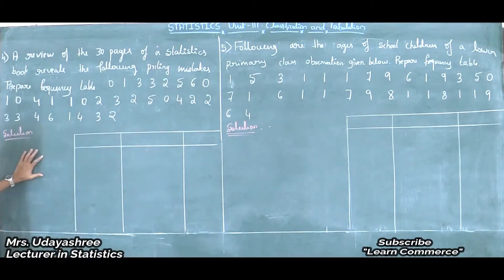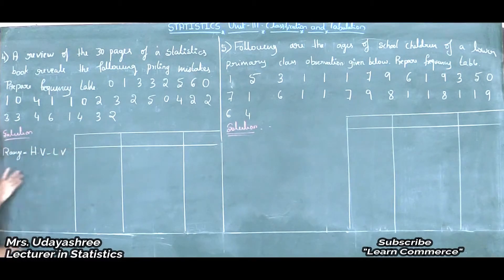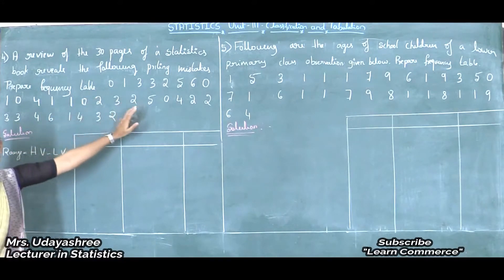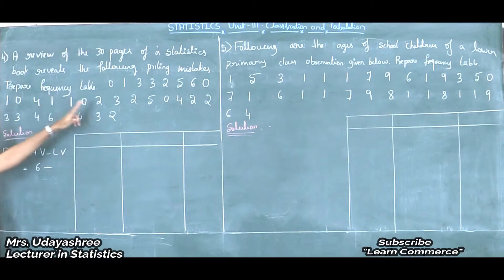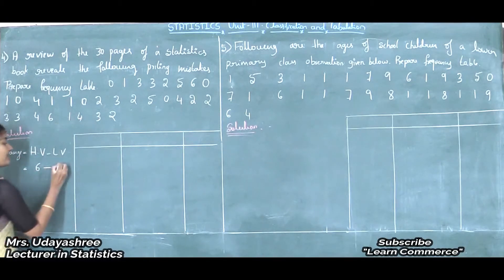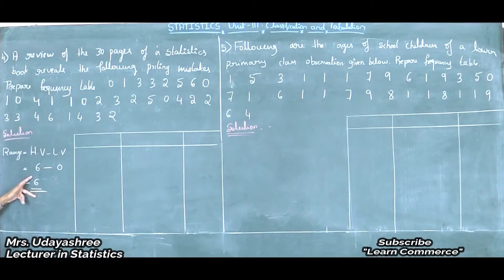First step: we need to find the range. The formula to find range is highest value minus lowest value. In this problem, the highest value is 6 and the lowest value is 0. So, 6 minus 0 is 6. Therefore, the range is 6. The range size is very small.